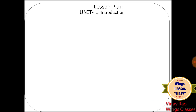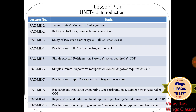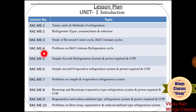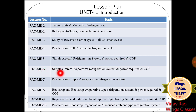This is our lesson plan which will be covered in further videos. For Unit 1, the lectures are divided as follows: Lecture 1 — Basic Terms Introduction; Lecture 2 — Refrigeration Types, Nomenclature and Selection; Lecture 3 — Study of Reverse Carnot Cycle and Bell Coleman Cycle; Lecture 4 — Problems based on Bell Coleman Cycle; Lecture 5 — Simple Aircraft Refrigeration System; Lecture 6 — Simple Aircraft Evaporative Refrigeration System.